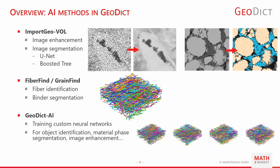First of all, an overview of where we are using AI methods within GeoDict. In Import GeoWall we have the image enhancement feature, which you can use for example to enhance micro CT images as we will see shortly. We also have the image segmentation feature, which can be used together with either the U-Net architecture or a boosted tree architecture in order to segment your image given some example labels.